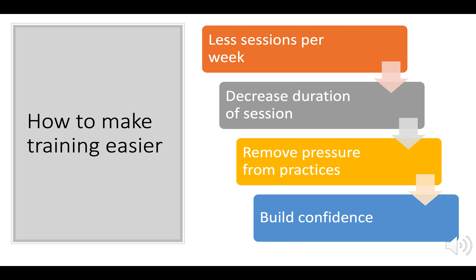We would look to make our training program easier if we were not seeing improvements when monitoring our performance, or if the performer suffered an injury. Ways to do this include decreasing the number of sessions per week, making sessions shorter but more productive at higher intensity, and changing the approaches to remove some pressure — for example, moving away from conditioned games back to repetition practices, or even shadow practices to groove the technique. We make these changes to build confidence and keep motivation high.